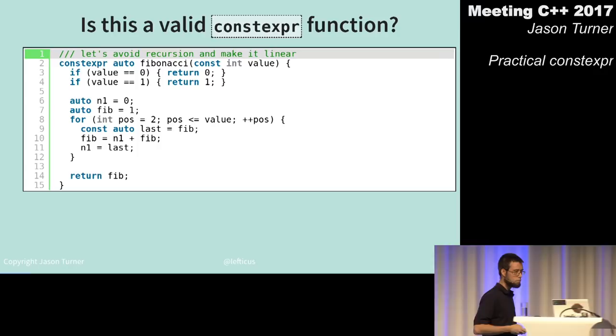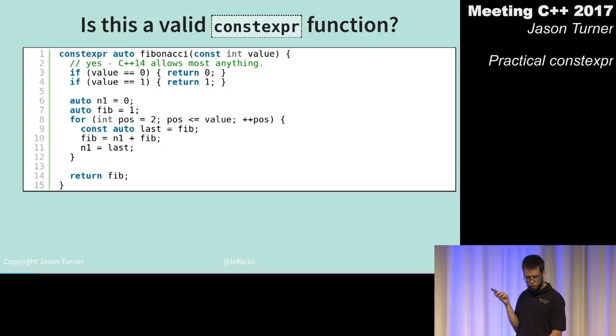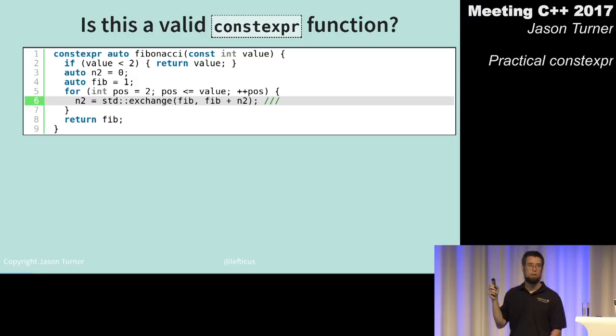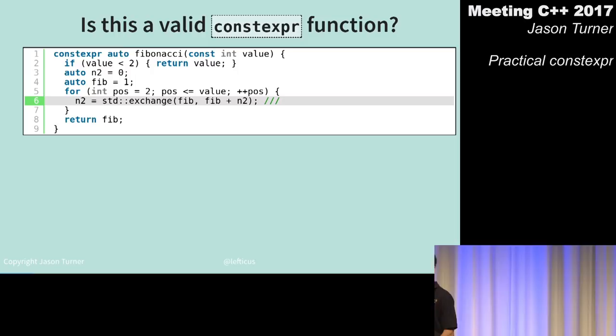We've changed it now. Instead of doing our exchange of values manually, we're using std::exchange. Is this a valid constexpr function? The key question: is std::exchange constexpr?